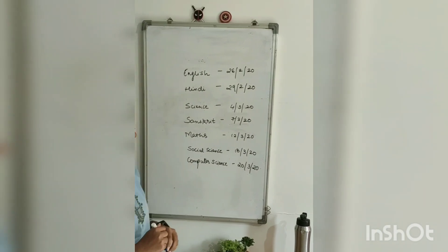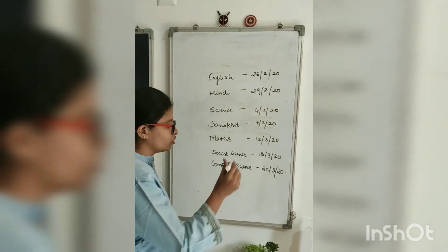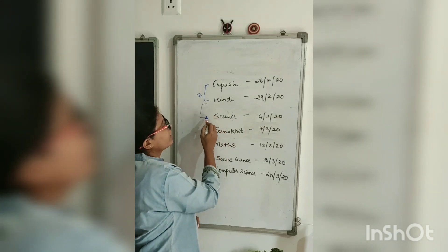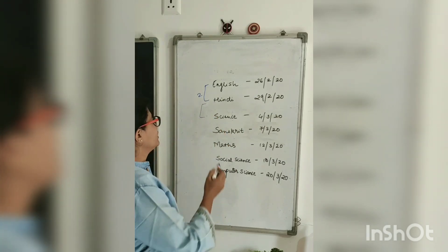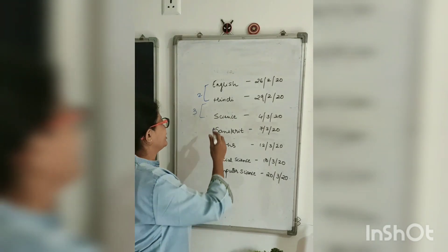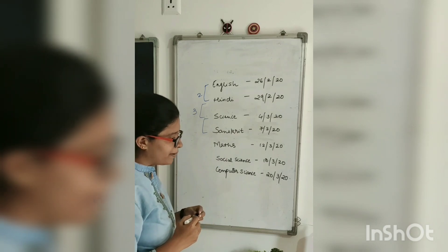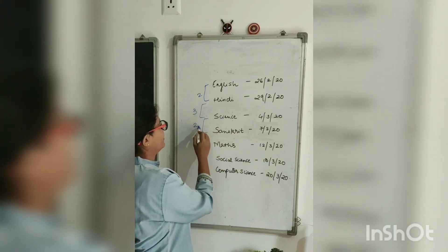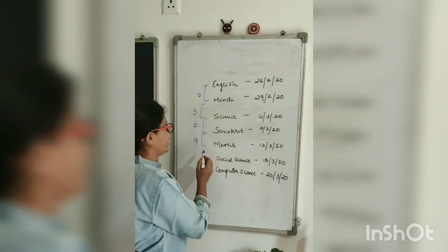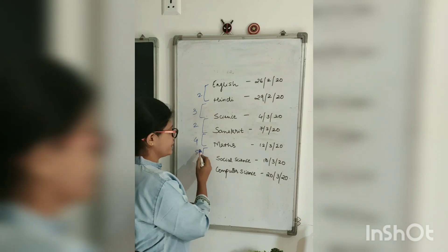I want to discuss this timetable. If we look at English and Hindi, there is a gap of 2 days. If we look at Hindi and Science, there is a gap of 3 days. From Science to Sanskrit, there is a gap of 2 days. Sanskrit to Maths is 4 days, and Maths to Social Science is 5 days — which is awesome.